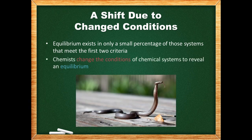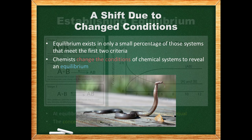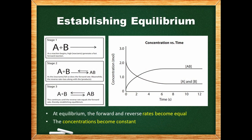Just as a child might poke a snake to see if it's alive, chemists poke chemical systems by changing their conditions. On the left, we have a diagrammatic representation of a chemical equilibrium being established. As the reaction begins, high concentrations of reactants generate a fast forward reaction. The forward rate falls as the concentrations of the reactants decrease, while the reverse rate rises along with the concentrations of products. The rates and concentrations continue to change until the reverse rate equals the forward rate, thereby establishing equilibrium.